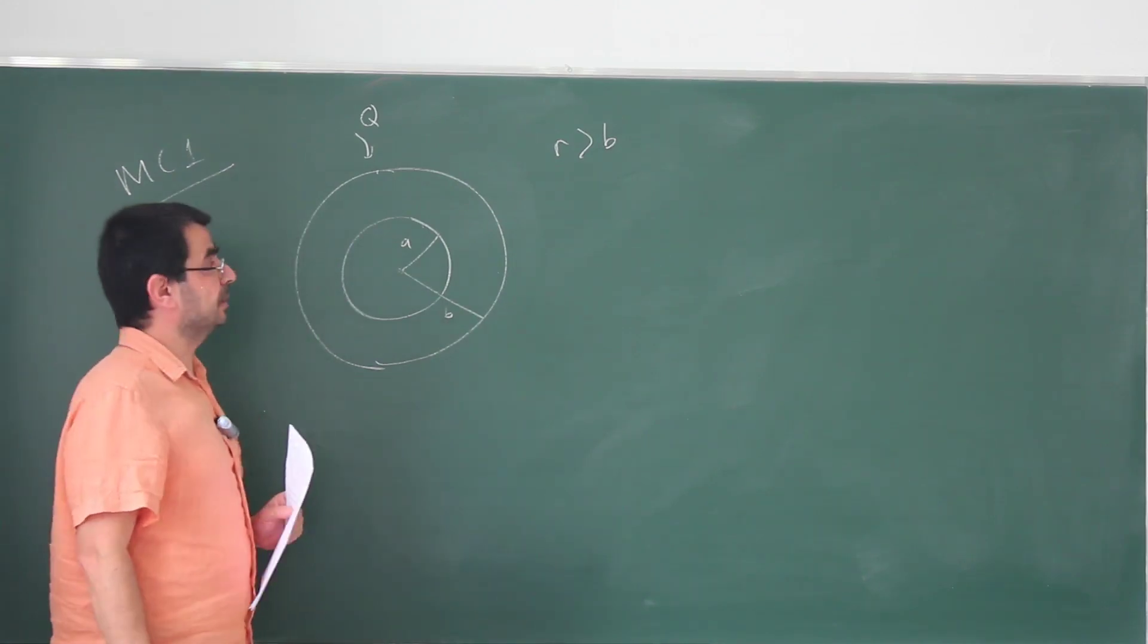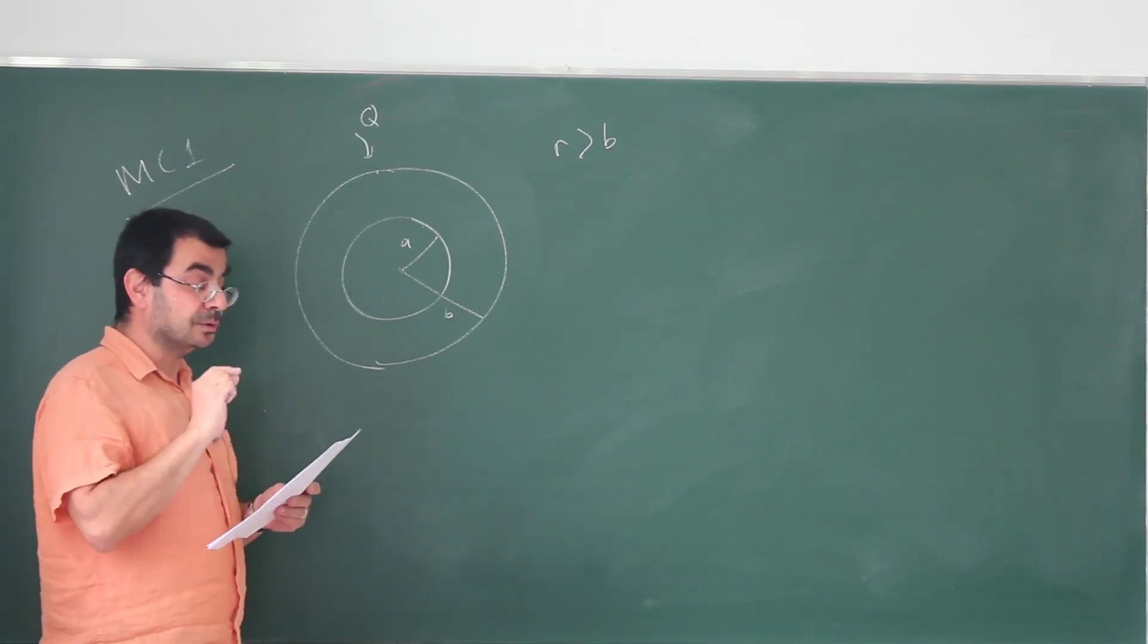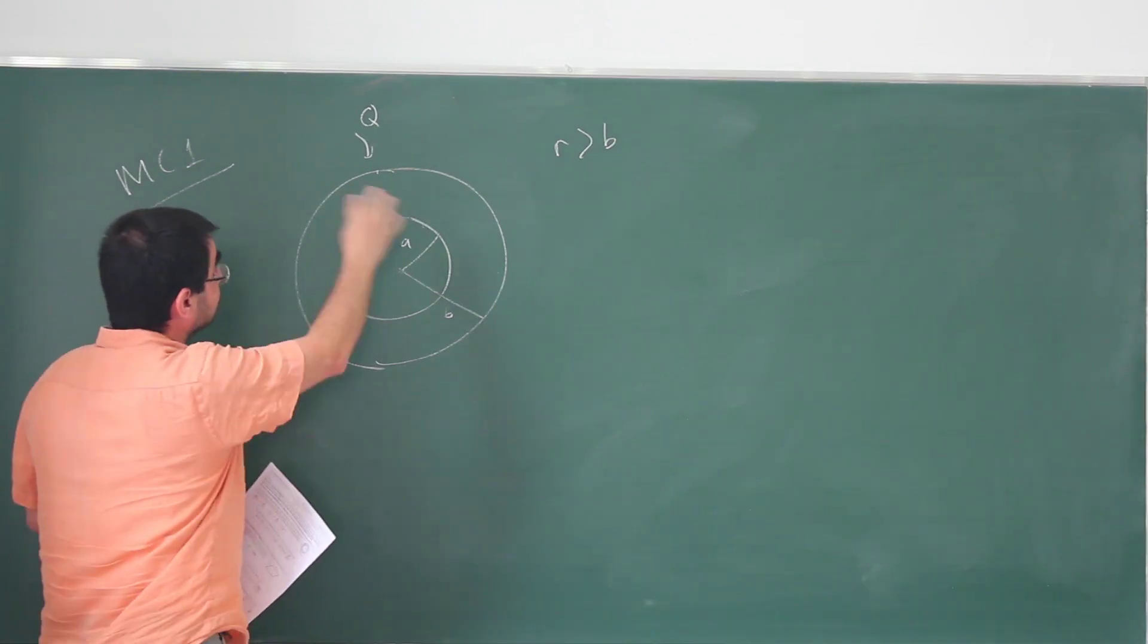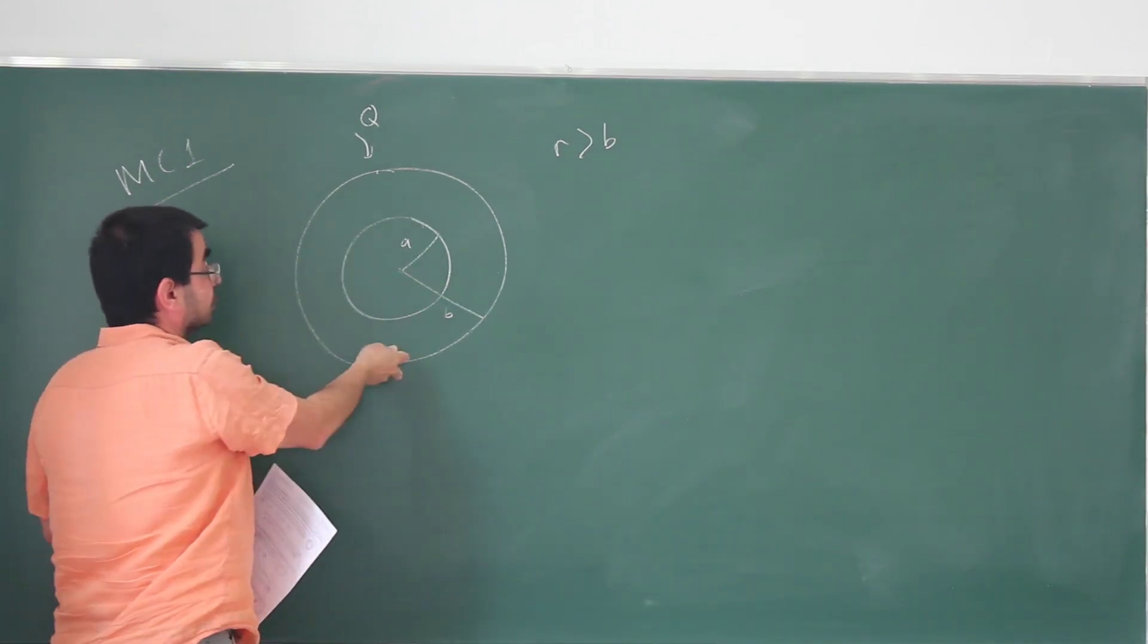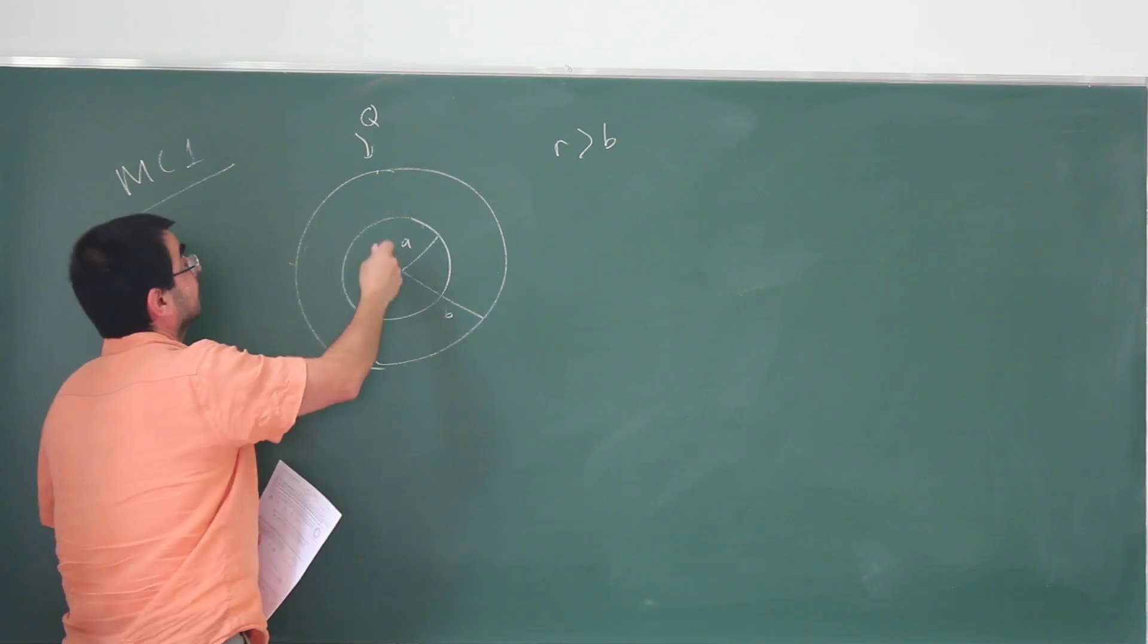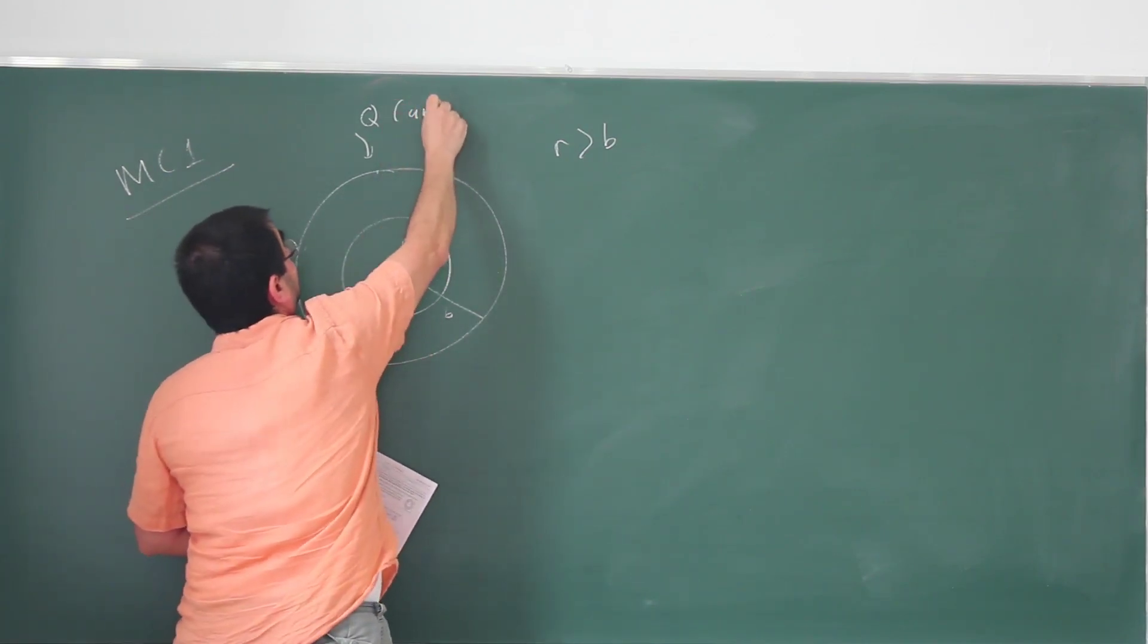At first sight, it might seem like this is impossible, but there's a very important clue that this is a conducting spherical shell. This total charge Q is going to come to the outer surface and distribute itself uniformly.